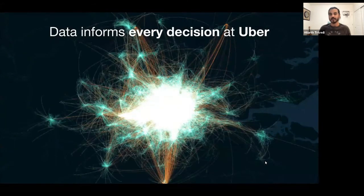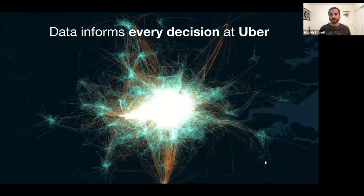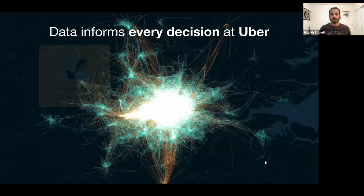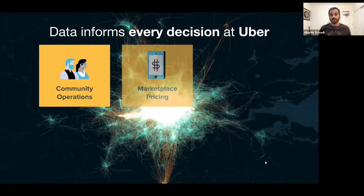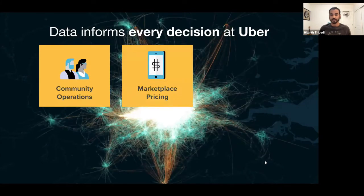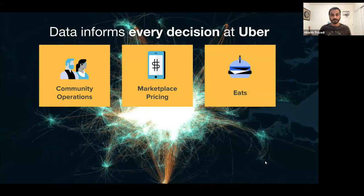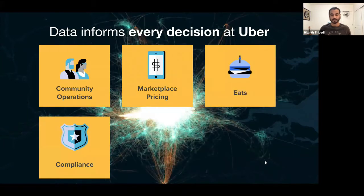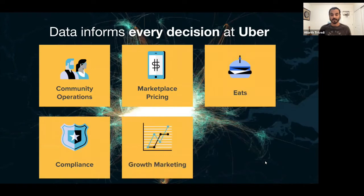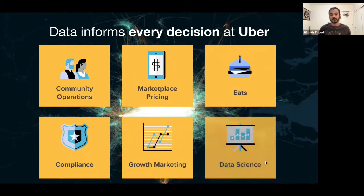Now data is very important and it is part of every critical decision at Uber. There are community operations teams at Uber which use data. These are small teams handling specific cities and regions. Marketplace pricing team also heavily uses data. Each team compliance team mainly uses data for legal purposes. Growth marketing team and our favorite data science teams.